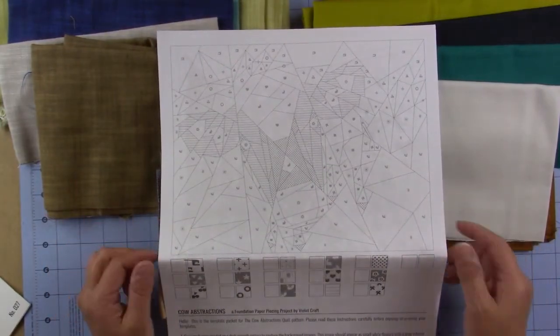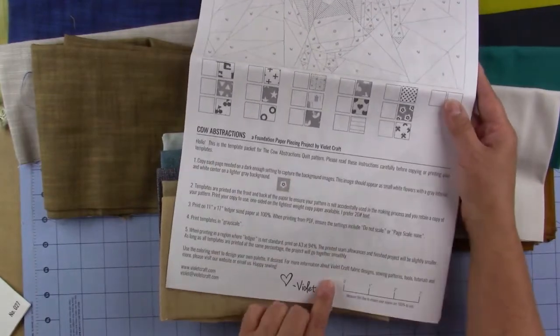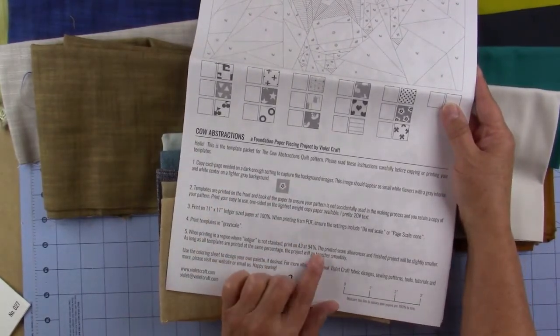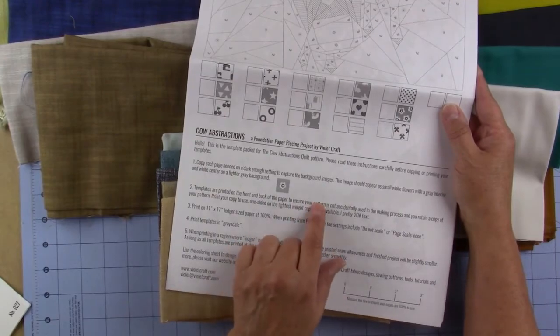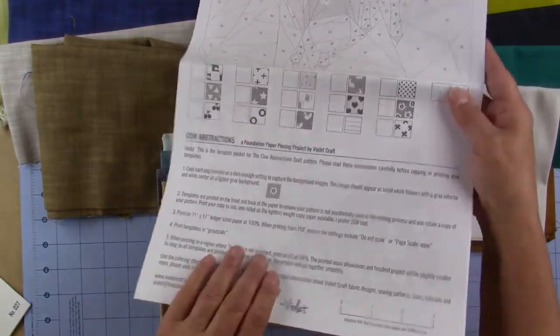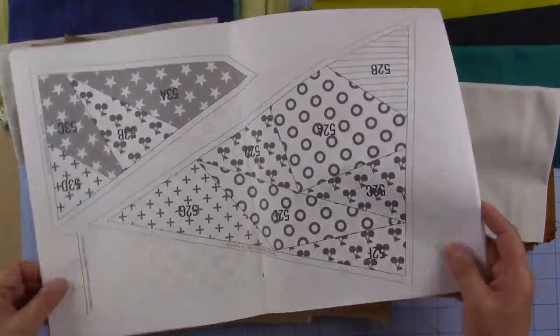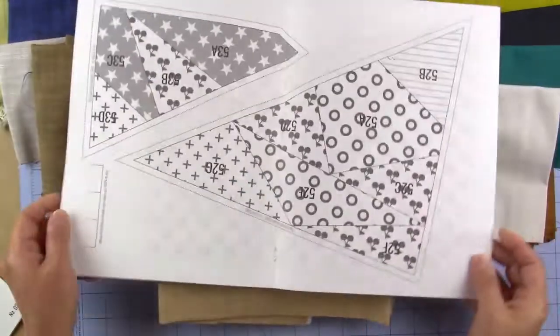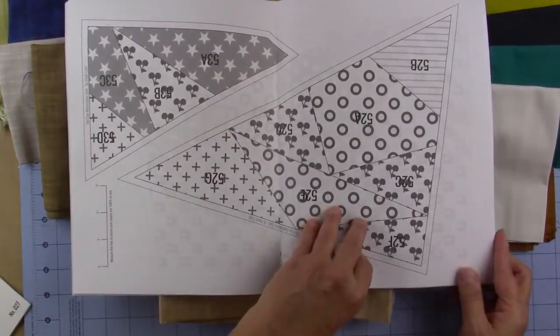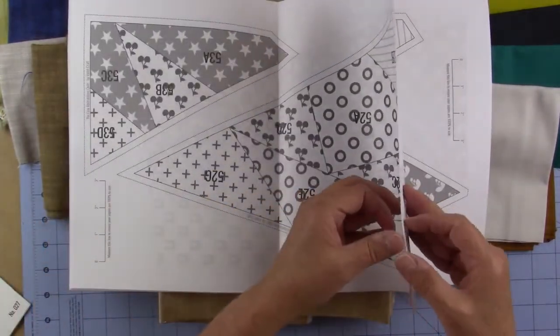These are all the instructions that come with it. If you don't know paper piecing, then you need to learn paper piecing before you start this. Most of these are telling you to print copies of these papers. The papers come on 11 by 17 sheets, and they're printed front and back.